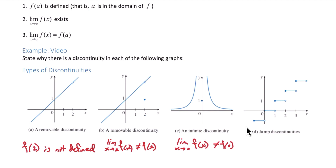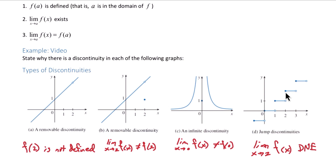In graph D, we have a jump discontinuity. Condition 1 is good — the function is defined everywhere. The problem occurs when we start looking at the limits. For example, let's focus on 2. The limit as x approaches 2 of f of x does not exist, because if you are approaching 2 from the left the value of the limit is 1, and if you are approaching 2 from the right the value of the limit is around 2. Since the left and the right-hand limits are different, the overall limit as you approach 2 does not exist.